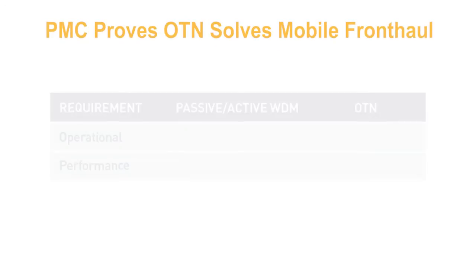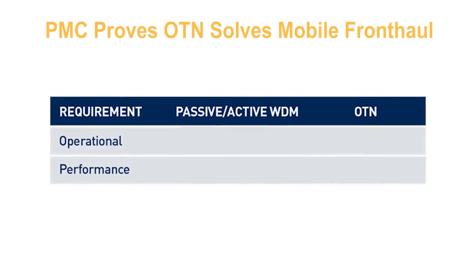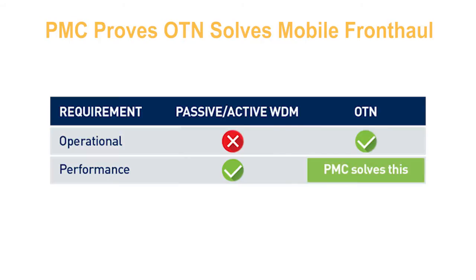For example, passive and active WDM-based solutions can meet the performance requirements but fall short on meeting the operational requirements. On the other hand, OTN, which is a standard carrier transport protocol in use worldwide today, meets the operational requirements but has been challenged to meet the performance requirements. And this is where PMC's new mobile fronthaul solution shines.